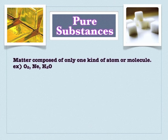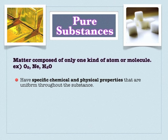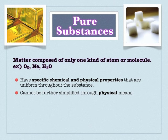A pure substance is matter composed of only one type of atom or molecule. You have things like elements — oxygen, ozone, neon, gold — and compounds — methane, sugar, water. These are all pure substances because they have specific chemical and physical properties; they are only one type of substance. They cannot be physically simplified, so methods used to separate matter will not work on a pure substance, whether it's an element or a compound.